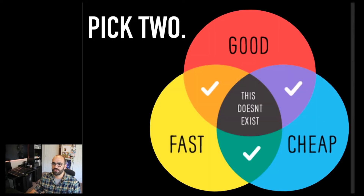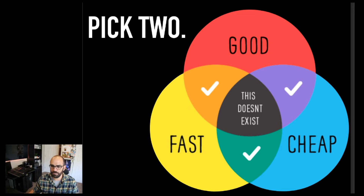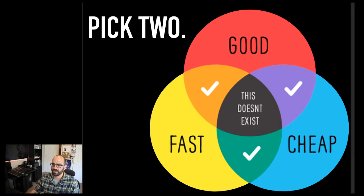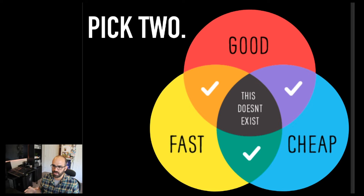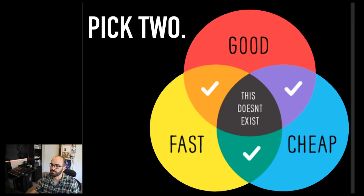I'm sure most of you have seen a graphic like this before — pick two of these: good, fast, cheap. All three of them don't exist. How many of you have been asked, two days before a thing, can you make this really great design happen and do it for a hundred bucks? It's not going to happen. You can't have all three of those things at once. You're going to have to pick two of them. If you've never seen this graphic before, I highly recommend you print it and put it up in your shops.